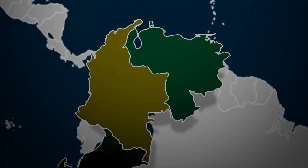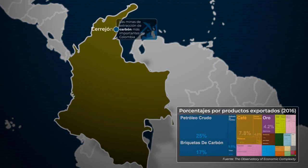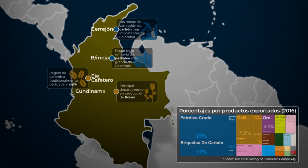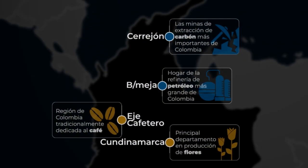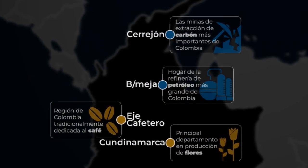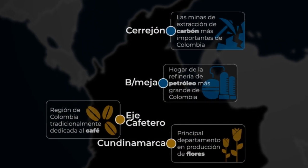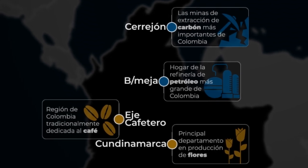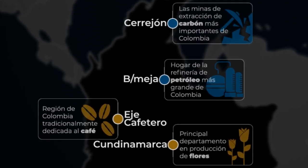Colombia, de la que seguramente habrás escuchado, tiene un suelo muy productivo y es rica en fauna y flora. Exporta como materias primas petróleo y carbón, del sector agrícola café, flores y banano, y de piedras preciosas oro y esmeraldas.